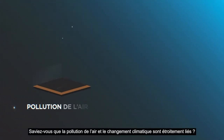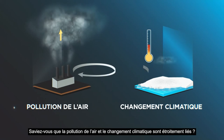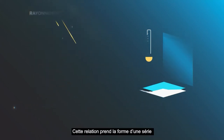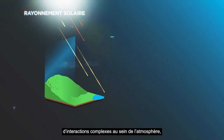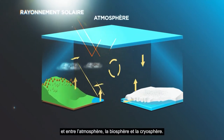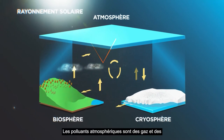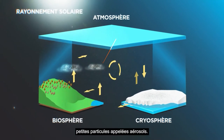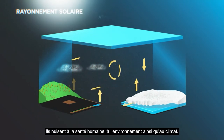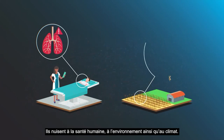Did you know that air pollution and climate change are closely interlinked? This link reveals itself through a series of complex interactions within the atmosphere and between the atmosphere, the biosphere and the cryosphere. Air pollutants are gases and small particles called aerosols that have detrimental impacts on human health, the environment and the climate.